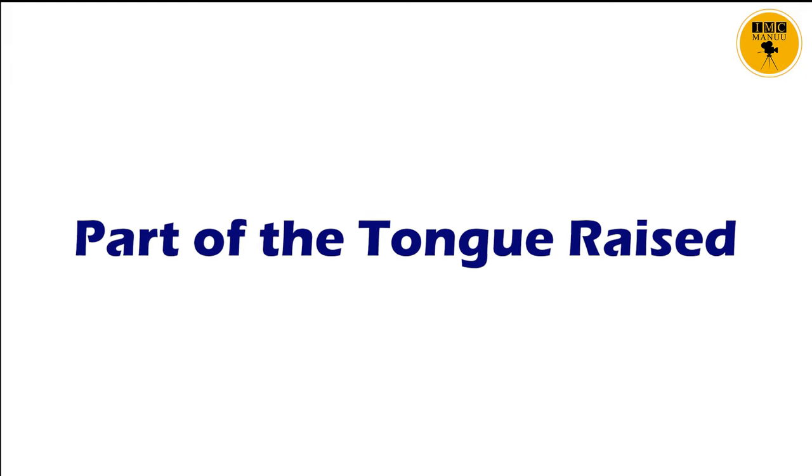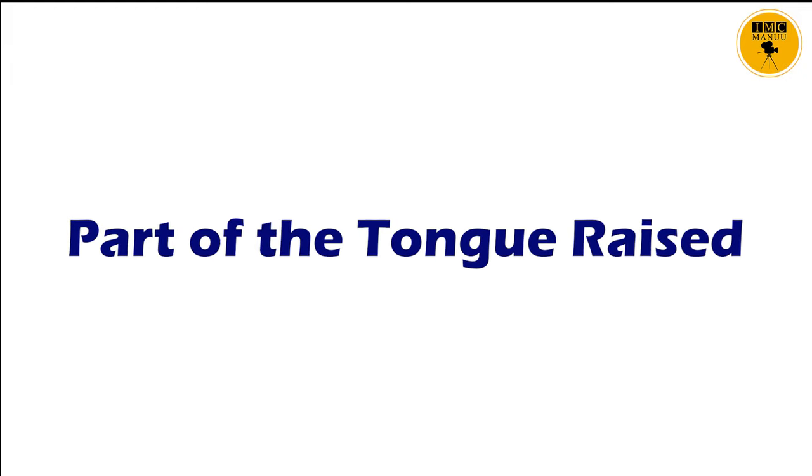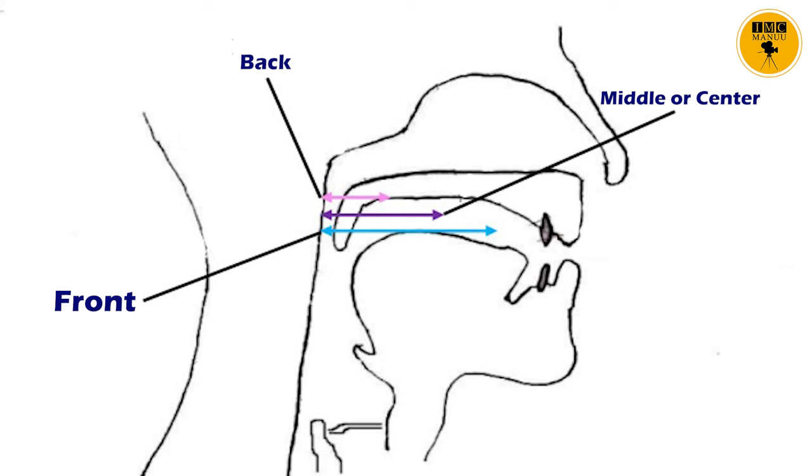When the soft palate is raised, we get oral sound. When it is lowered, we get nasal vowel sound. The tongue can be divided into three parts for classification of vowels: the front, the middle or the center, and the back. Talking about the front of the tongue, we have front vowels, as in 'heat' or 'meat'. We have back vowels, like 'palm', when the back of the tongue is raised, or central vowels when the middle or center of the tongue is raised.